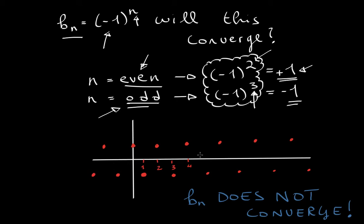Clearly this does not settle anywhere, therefore the limit does not exist, and the limit not existing is another way of saying it does not converge. In this video, I wanted to prove to you that B_n does not converge.